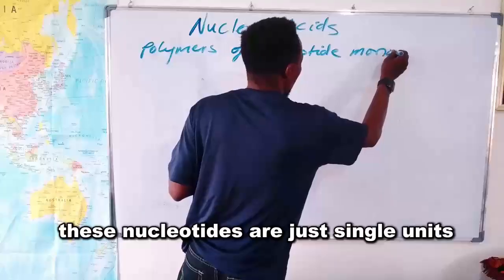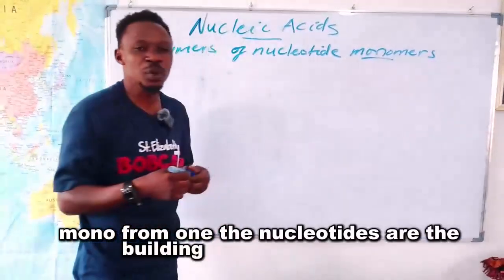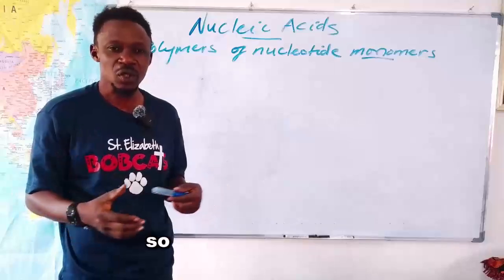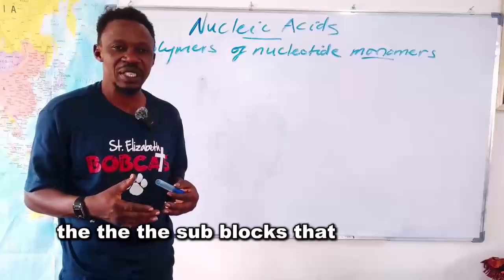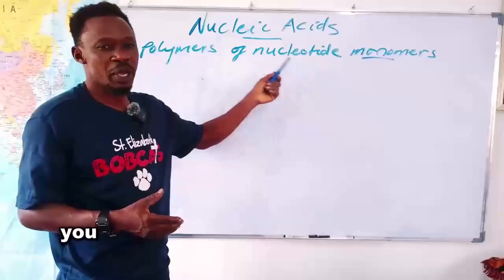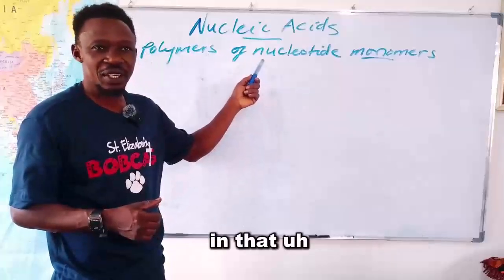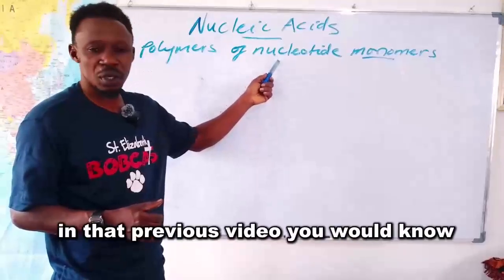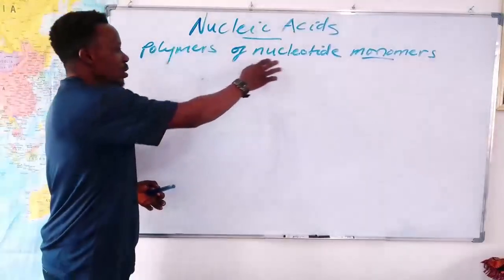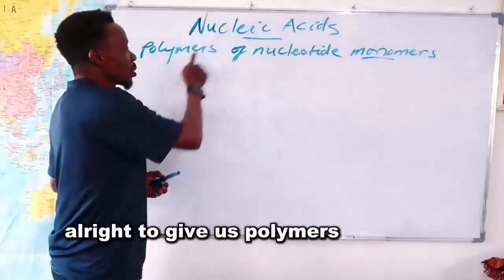So in this case, nucleic acids are polymers of nucleotides. Nucleotides are single units, so we call them monomers — 'mono' meaning one. Nucleotides are the building units of DNA and also the building units of RNA. Multiple nucleotides linked up together give us polymers — the polymers of nucleic acids.